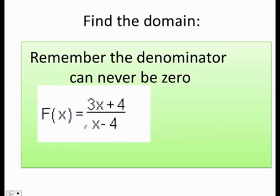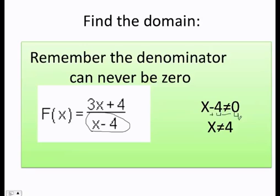So if you get a function like this one, just go ahead and grab the bottom, in this case x minus 4, and just make it that cannot be equal to zero. And then you solve for x. I do plus 4 here, and then I do plus 4 here, and I get that x cannot be equal to 4.